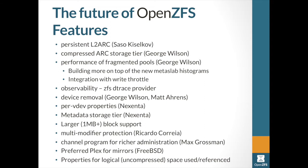Fragmented pool performance builds heavily on the new metaslab histograms. An interesting integration is with the write throttle: if you're trying to slow a writer down for I/O resource management, it doesn't make sense to allocate from the best large free blocks. Instead, the idea is to allocate from small, expensive, fragmented blocks when throttling a writer — saving the big contiguous blocks for when you actually want to write at full speed.